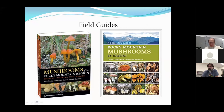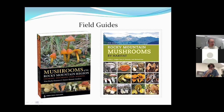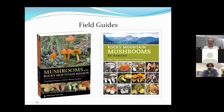Now we'll switch over to the expo where we have some of the mushrooms John talked about. At the fair today we got a number of boletes — Boletus edulis, Boletus barrowsii, and a couple of Leccinum species with dark scabers. We also have Russula and Lactarius species, brown-spored species including Cortinarius and Inocybe, and lots of smaller mushrooms growing in moss along streams — little Galerinas and Mycenas — reflecting the lack of moisture.